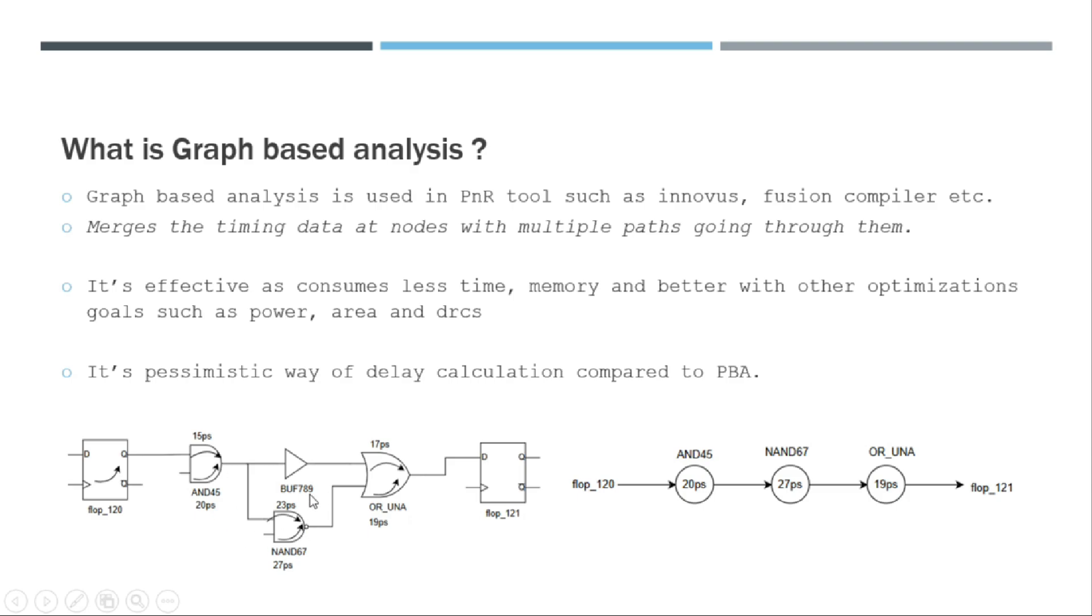So this is the way how it simplifies the problem, but now you understand that it is adding pessimism at each stage. So for example, in this case it should have seen 15 PS actually because the data is traveling from this first pin to the output, but it is taking the delay of the second pin. So the difference is 5 PS. Similarly, the delay here is actually around 4 PS.